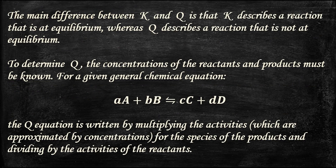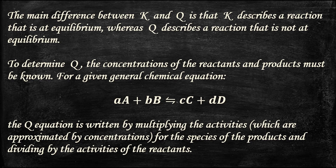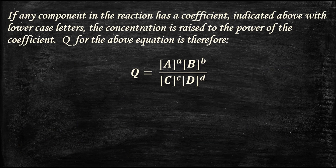The main difference between K and Q is that K describes a reaction at equilibrium, whereas Q describes a reaction not at equilibrium. To determine Q, the concentrations of the reactants and products must be known. Consider a general chemical equation: aA + bB in equilibrium with cC + dD, where capital letters represent reactants and products, and lowercase letters represent the stoichiometric coefficients. Q is written by multiplying the activities (approximated by concentrations) of the products and dividing by the activities of the reactants, with each concentration raised to the power of its stoichiometric coefficient. Q = [C]^c × [D]^d / [A]^a × [B]^b.